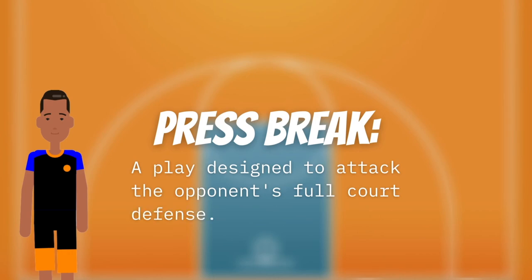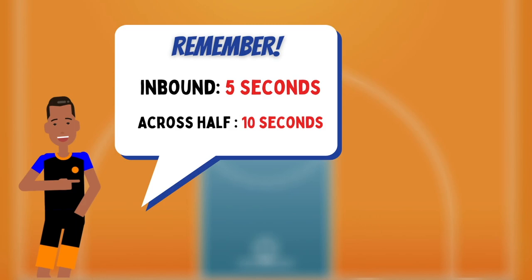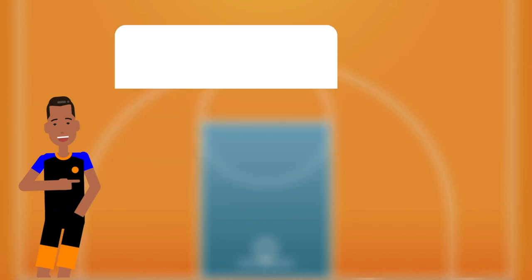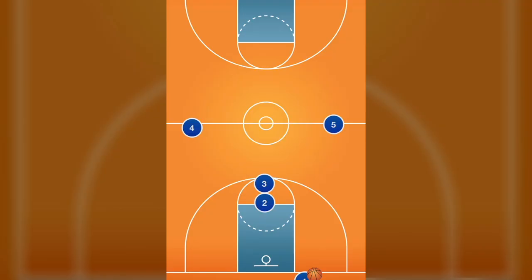A press break is a play designed to attack the opponent's full-court defense. When attacking a press, teams have 5 seconds to inbound the ball and 10 seconds to get the ball across half-court before encountering a violation. Keep in mind, after a made basket, players are allowed to run along the baseline to inbound the ball. We will cover two plays that can counter a high-pressure defense.